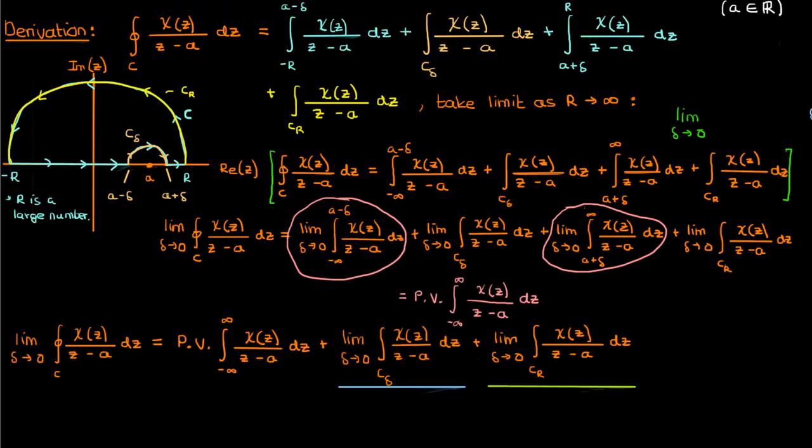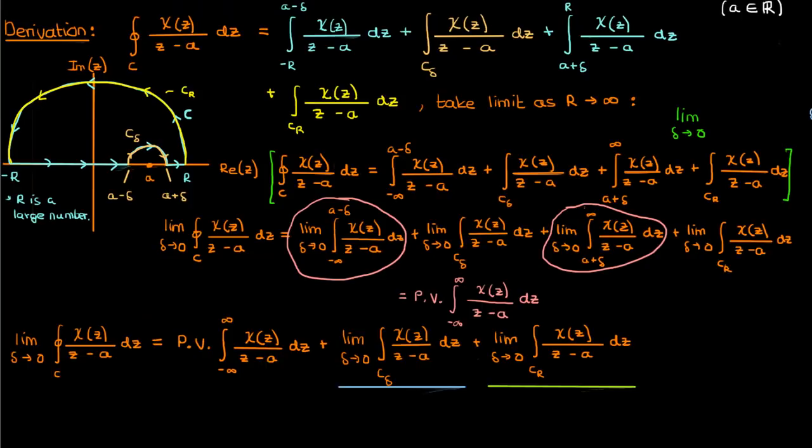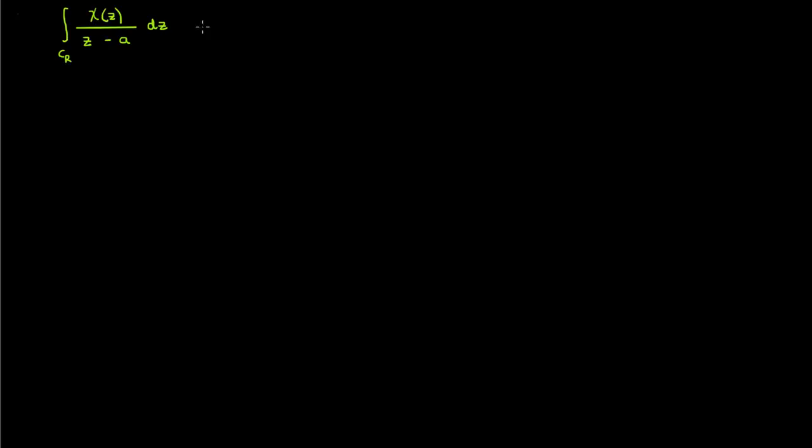We still have to evaluate the integral over the large semicircular arc C_R. This semicircular arc stays the same regardless of the value of delta, and we remind ourselves that we took the limit as R approaches infinity. Now how do we evaluate this integral over a large semicircular arc whose radius approaches infinity? You can evaluate it using Jordan's lemma.